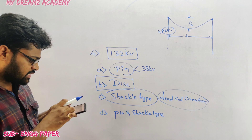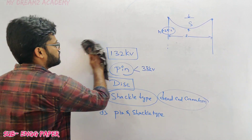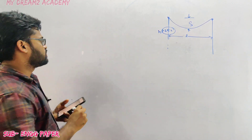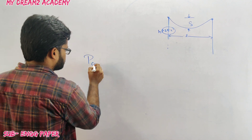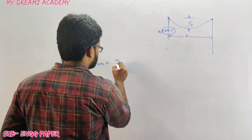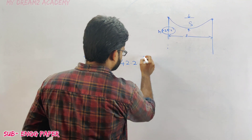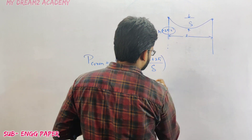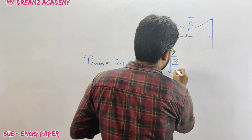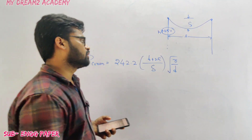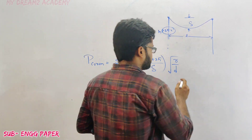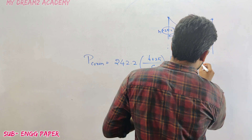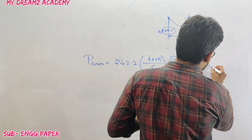Question number five: corona loss increases with what? The corona loss formula is: P = 242.2(f + 25) × √(r/d) × (V − Vd)² × 10⁻⁵ kilowatt per phase, where f is frequency, r is the radius of the conductor, d is the distance between conductors, and Vd is the critical disruptive voltage.